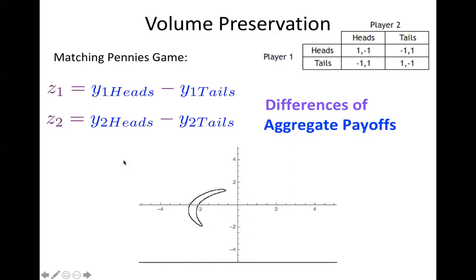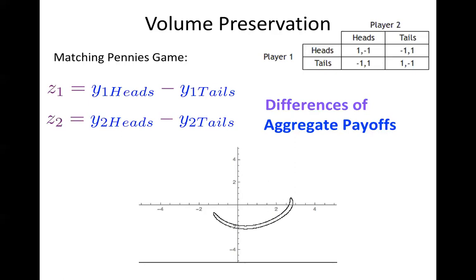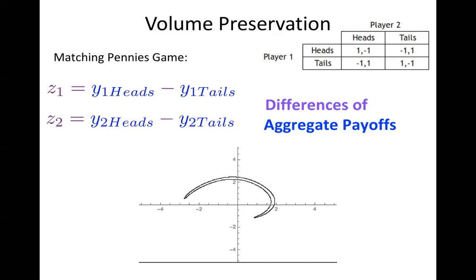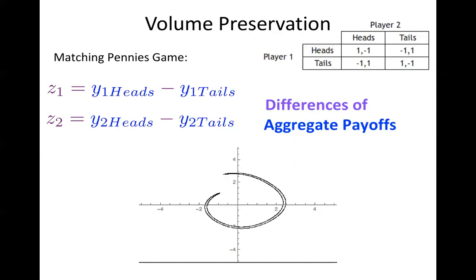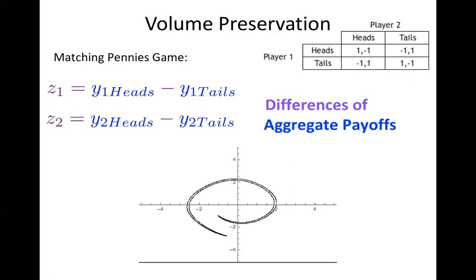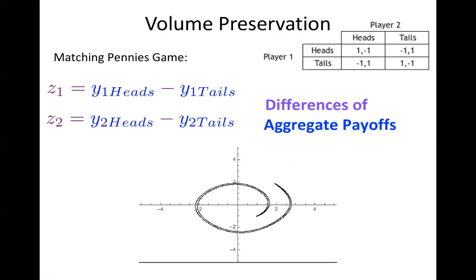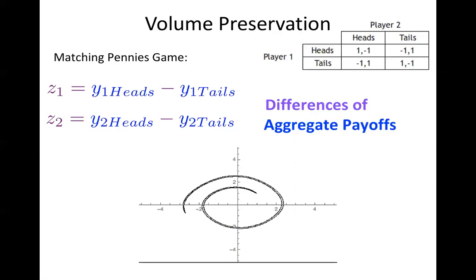Moving the dynamics forward in this new space, we see our initial set of conditions being deformed — stretched out, 'spaghettified' — yet pictorially the volume does not change much, and crucially the trajectories do not escape to infinity. If we can formally prove these two properties in this space we can immediately apply Poincaré recurrence and prove our theorem.